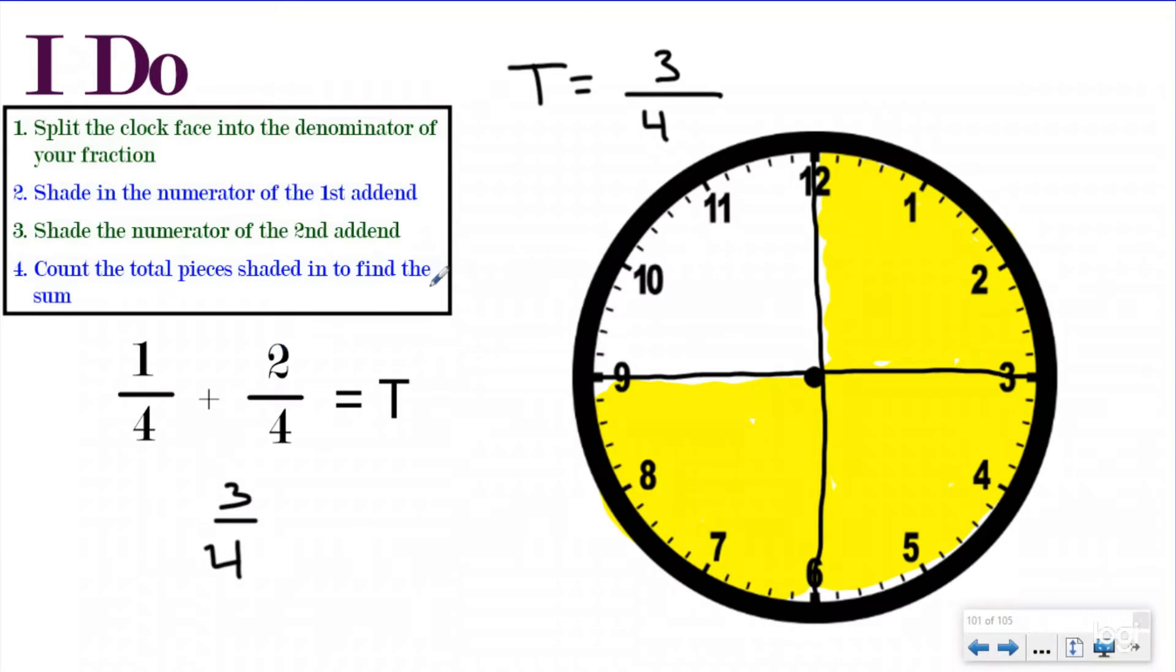Now, one thing I want you to notice is the denominator didn't change. When you're adding fractions, you add the numerators, and the denominators don't change. If I did four plus four, that would have made my denominator eight, and I'd say my answer was three-eighths, which it isn't, because if I split this into eighths, I actually have six-eighths.